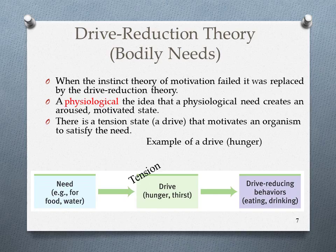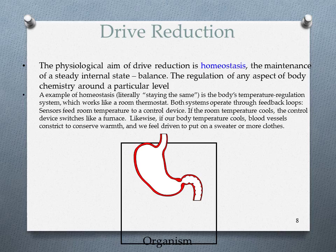The physiological aim of drive reduction is homeostasis — the maintenance of a steady internal state or balance. Your body needs to be balanced. It's the regulation of any aspect of the body's chemistry around a particular level. For example, you want your thirst to be balanced — your body should be hydrated enough. An example of homeostasis is the body's temperature regulation system, which keeps you literally staying the same, balanced.